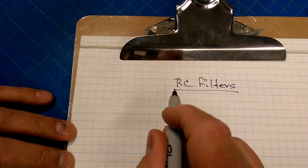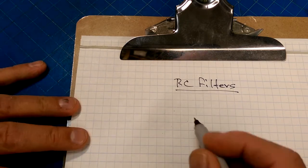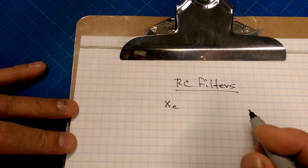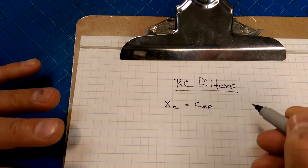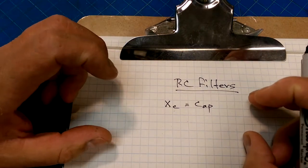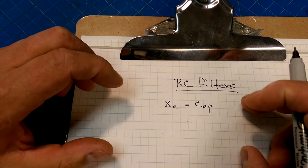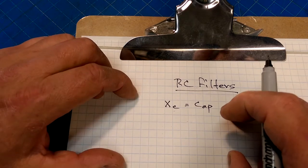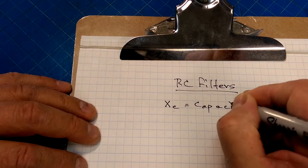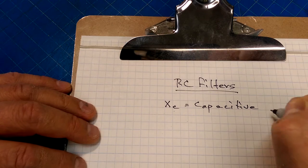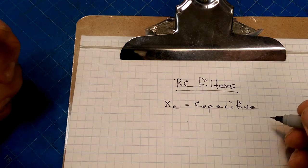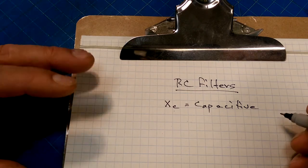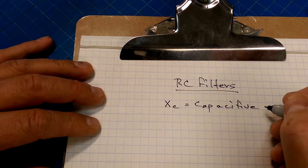RC filters depend on resistor and capacitor filter networks, which depend on a property of capacitors called the capacitive reactance. That is a term that you use to describe the frequency dependence of a capacitor's resistance.